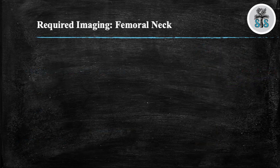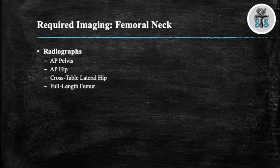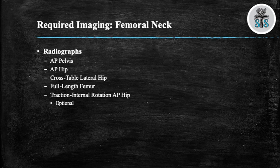When you suspect a femoral neck fracture, you should obtain an AP pelvis, AP hip, cross table lateral of the hip, and full length femur films. In addition, you can obtain a traction with internal rotation x-ray, but this is optional as it can cause a significant amount of pain for the patient. If you decide to do this, you'll need to internally rotate the leg approximately 15 degrees while providing traction. You can also obtain a CT scan.